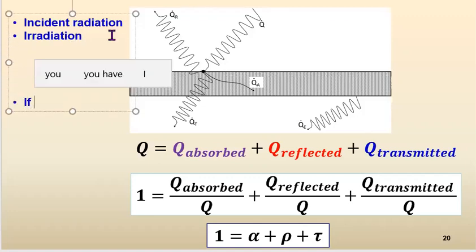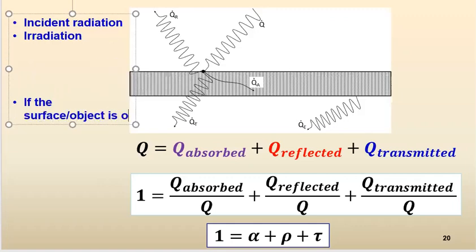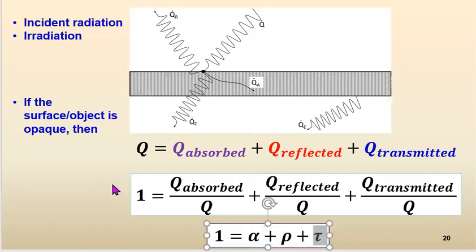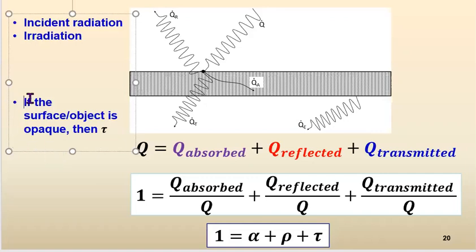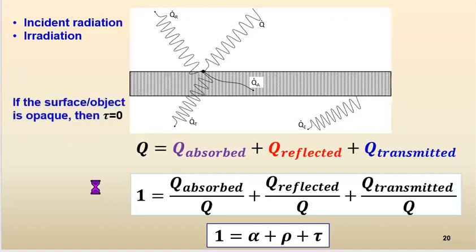For an opaque material, transmissivity tau = 0, because it does not let light pass through. Therefore for opaque surfaces, alpha + rho = 1.